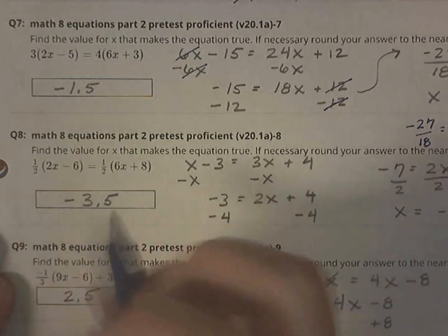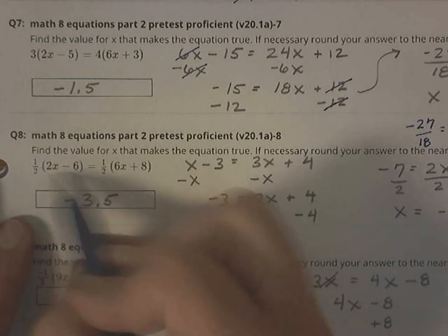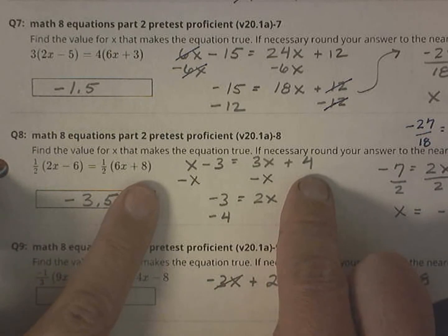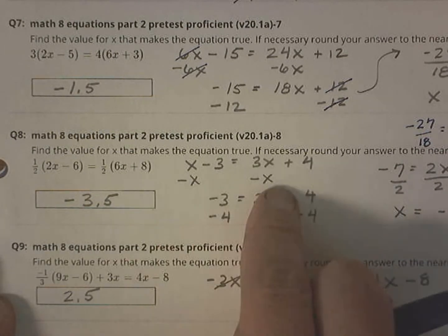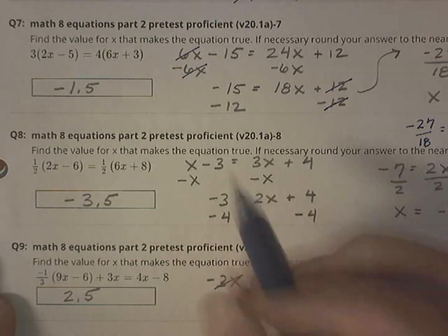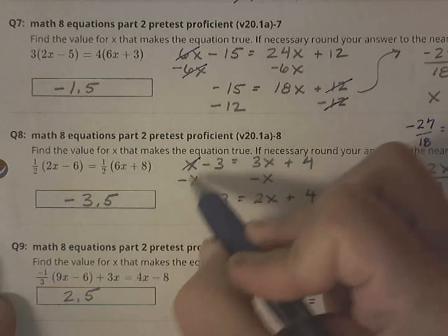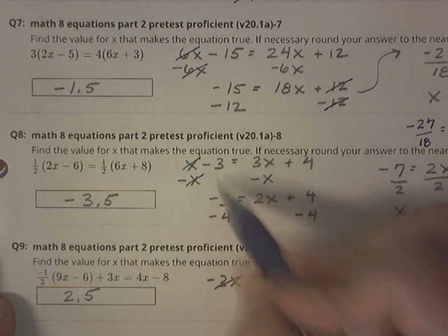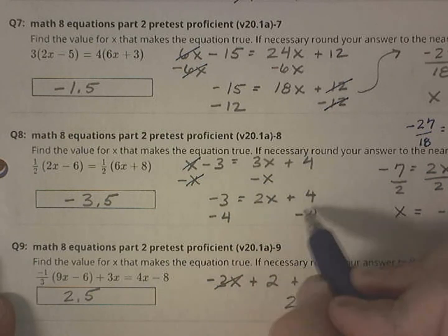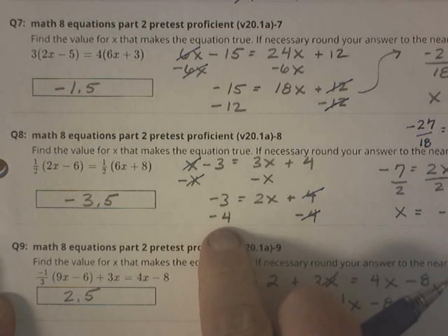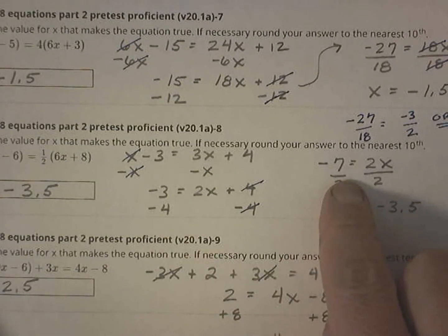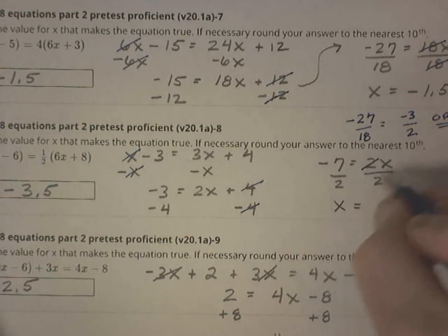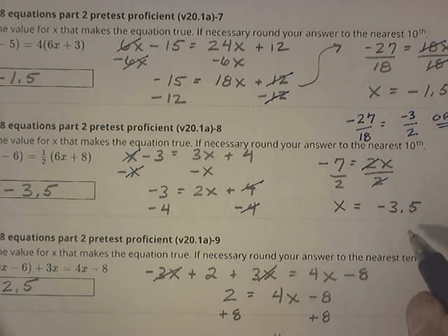Number 8, I'm going to start by distributing the 1 half. Half of 2 is 1. Half of negative 6 is negative 3. Half of 6 is 3. Half of 8 is 4. I'm going to move all the x's to, in this case, the right side, subtracting x from both sides right here. That way x stays positive. So I have negative 3 equals 2x plus 4, subtracting 4 from both sides. That gives me negative 7. Negative 7 equals 2x, dividing both sides by 2. So x equals negative 3.5.